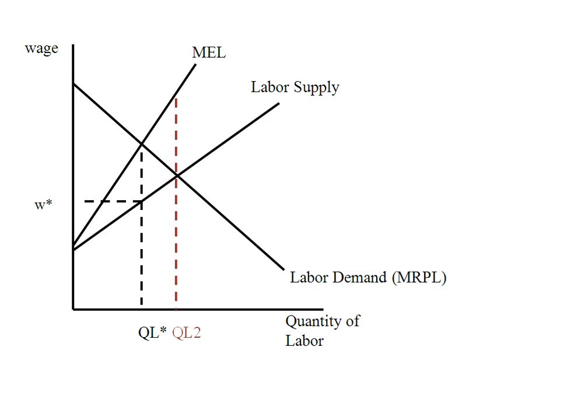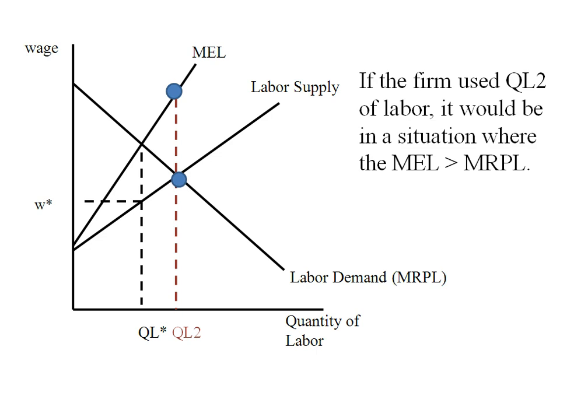Suppose instead the firm were using a higher quantity of labor, QL2. At QL2, the marginal expenditure on labor exceeds the marginal revenue product of labor. So the firm would be spending more per worker than the value of that worker, and if that were the case they'd actually want to be using less labor.